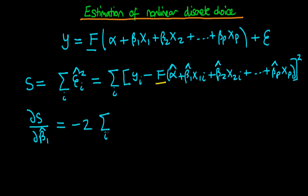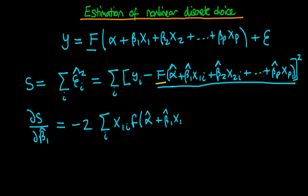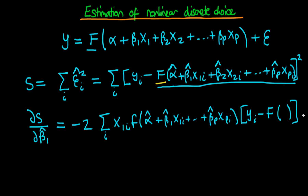We then get the sum across i of x1i — because differentiating the term in parenthesis gives us x1i — but also when we differentiate the whole thing including capital F, we are left with a small f, where small f indicates the derivative of big F. This is evaluated at alpha_hat plus beta_1_hat times x1i through to beta_p_hat times xpi, multiplied by the residual y_i minus capital F of everything. We set this whole term equal to zero.